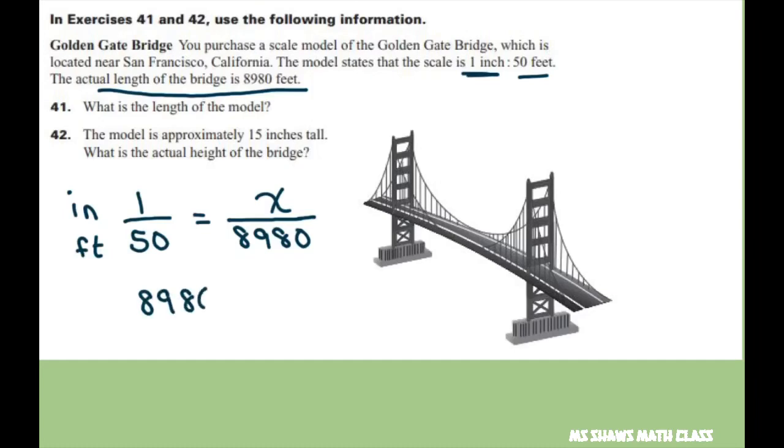You get 8980 divided by 50 equals X, and that's going to give you 179.6 inches. So this is inches and feet.